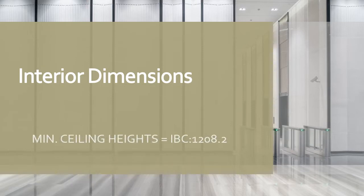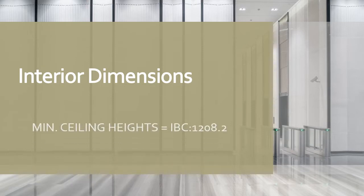To recap those interior dimensions: according to International Building Code 1208.2, there is a minimum ceiling height requirement of seven feet six and a half inches for habitable spaces. Other spaces such as storage areas, laundry rooms, bathrooms, and kitchens have a minimum ceiling height of seven feet.